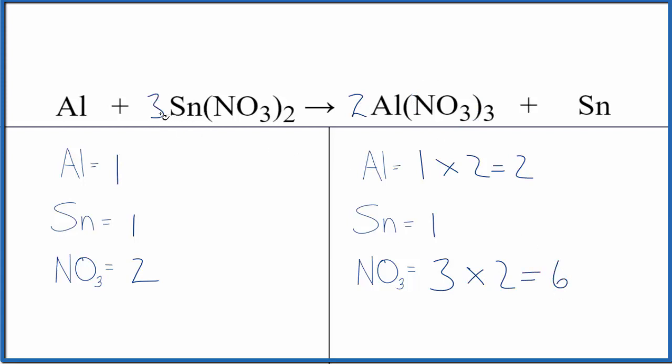Put a three here. One times three for the tin, three of those. And then nitrates, we have two nitrates times three. That'll give us six. Now it's not too bad.